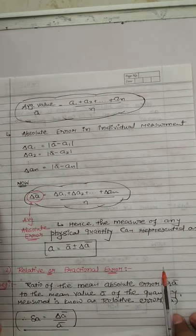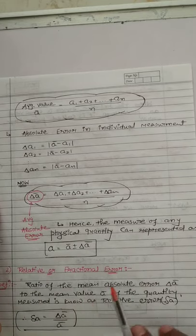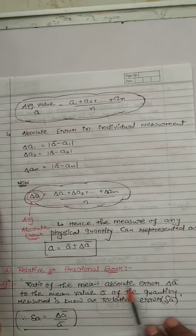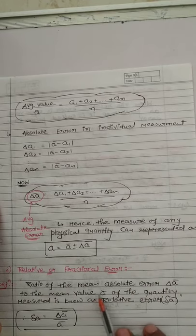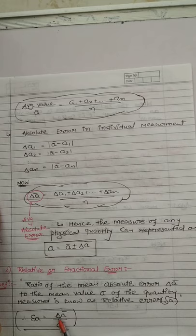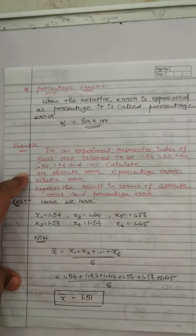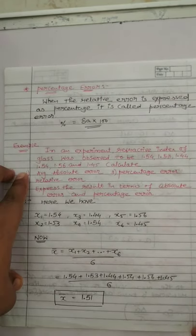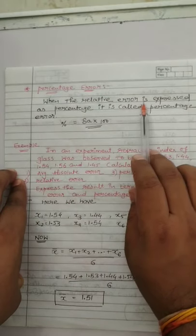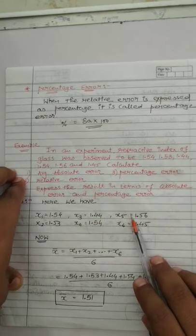Relative or fractional error: it is the ratio of the mean absolute error delta A-bar to the mean value A-bar of the quantity measured, and is known as relative error. So del A is equal to delta A-bar upon A-bar. When the relative error is expressed as a percentage, it is called the percentage error.